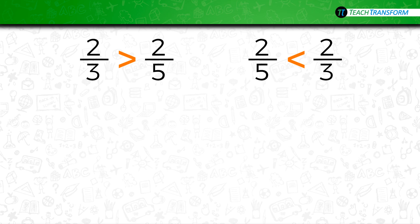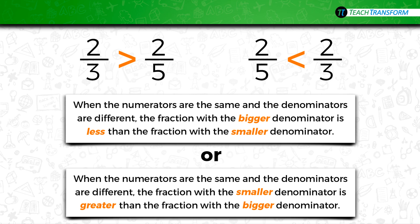In part three you had to write some comparisons. There are two ways to write the comparisons: you can write 'two-thirds is greater than two-fifths' or 'two-fifths is less than two-thirds.' Here's the first rule: when the numerators are the same and the denominators are different, the fraction with the bigger denominator is less than the fraction with the smaller denominator. The other way: the fraction with the smaller denominator is greater than the fraction with the bigger denominator.